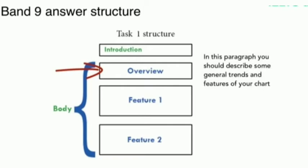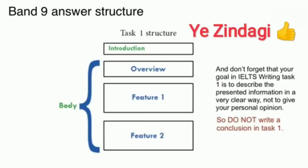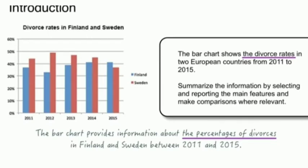You can merge the overall with the introduction — it is up to you whether you want to make a separate paragraph for the overall or write it with the introduction. But writing the overview is very important. In body one, you can explain one country with some limited data. In body two, you explain the remaining data. Never write a conclusion in Task 1. The overview contains the highlighted features — that is what we write in the overview.